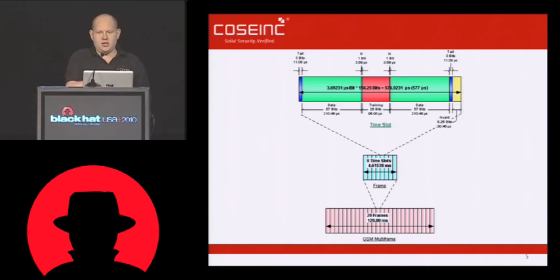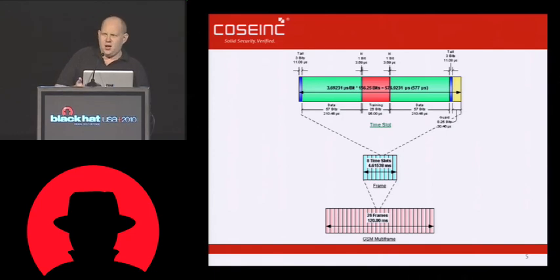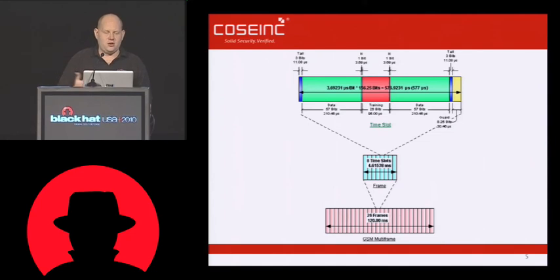Each of these timeslots has 23 bytes of information. So when we do our fuzzing attacks — when we're trying to fuzz the phone — we only have 23 bytes to play with. We could actually do a complete exhaustion of all possible combinations in a very short space of time. It takes about three days to run through a complete exhaustion of just one channel.